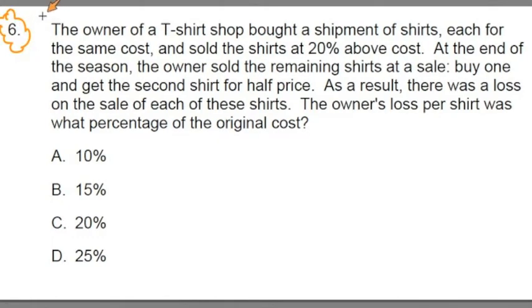I'll read it over, you visualize. The owner of a t-shirt shop bought a shipment of shirts, each for the same cost, and sold the shirts for 20% above cost. At the end of the season, the owner sold the remaining shirts at a sale. Buy one, get the second shirt for half a price. As a result, there was a loss on the sale of each of these shirts. The owner's loss per shirt was what percent of the original cost.